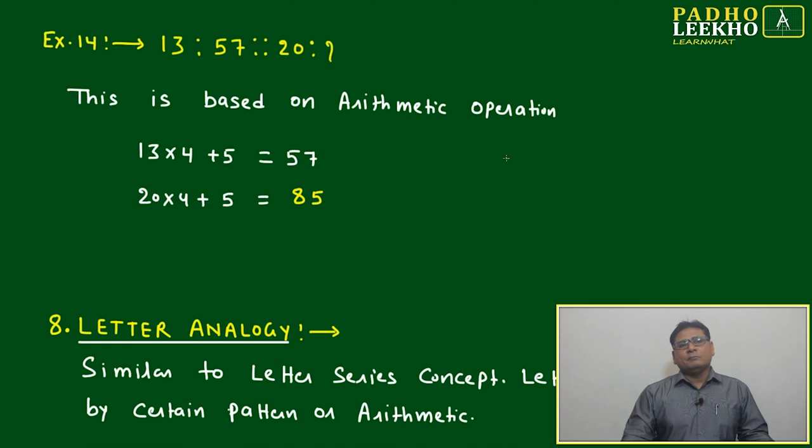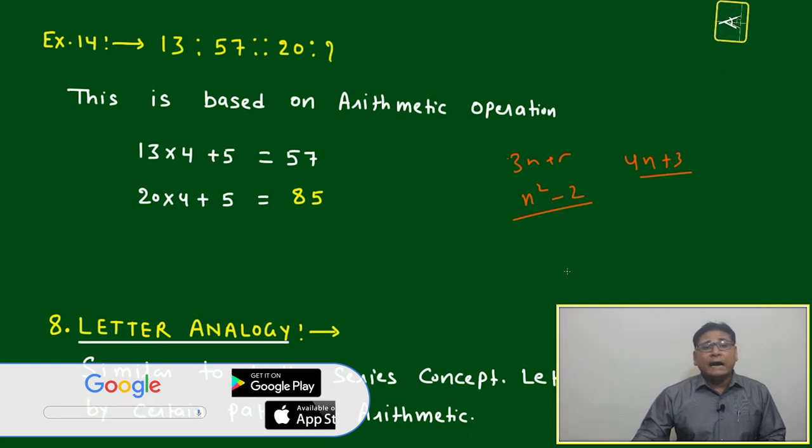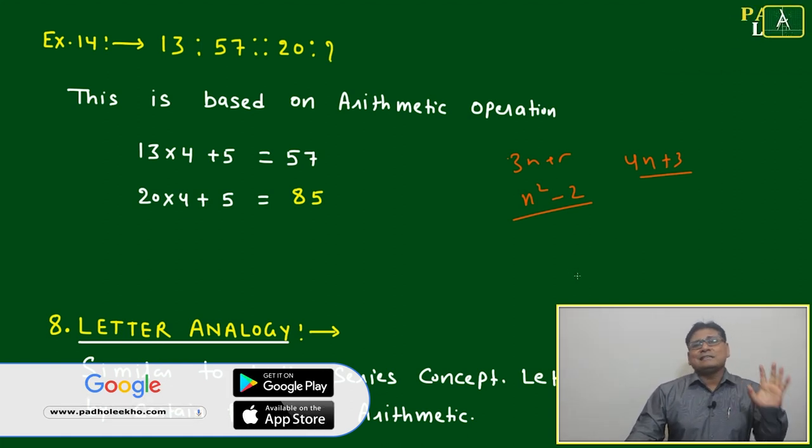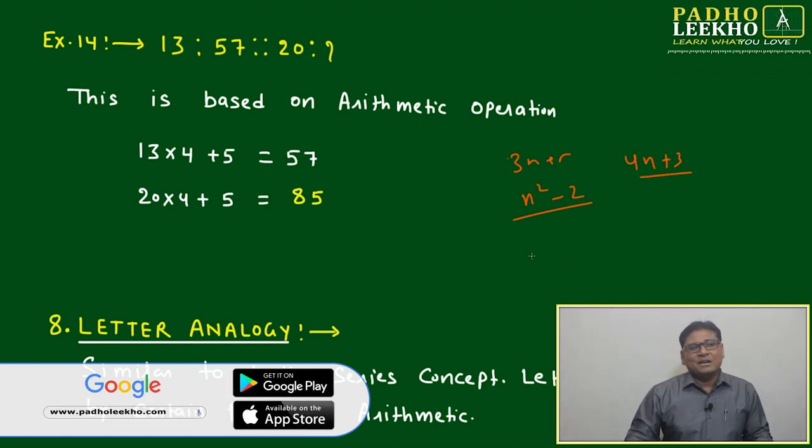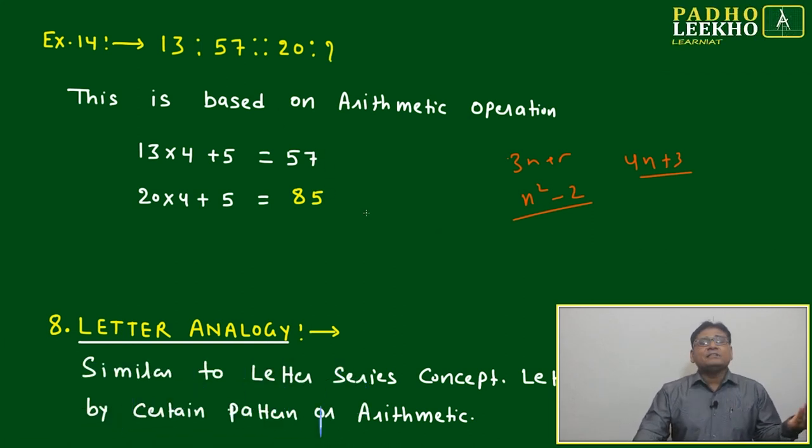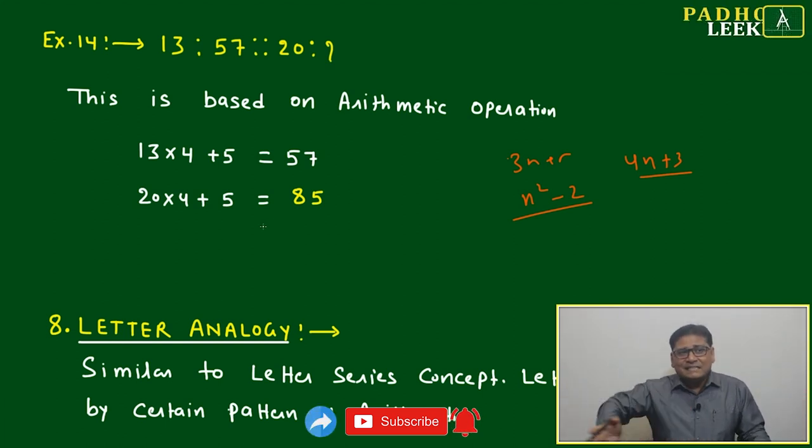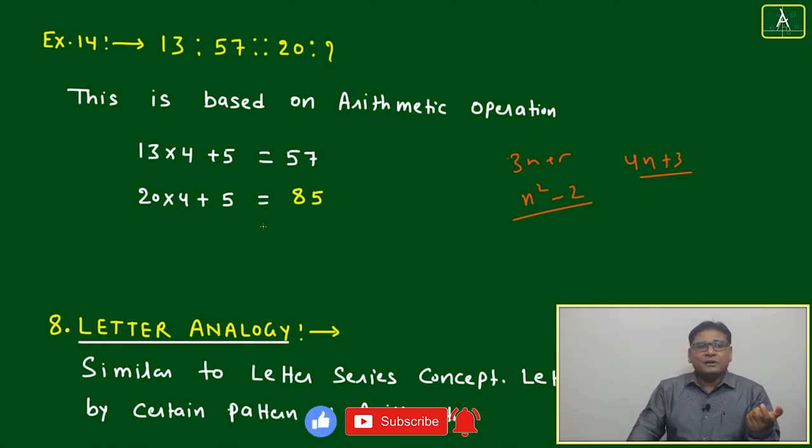Making the relation is very simple: 3n plus 5, we can confirm n square minus 2, or we can write 4n plus 3. But identifying this particular relation is difficult. Like 13 and 57 can be interrelated with multiple types of arithmetic relations. And this is not a series, this is only two numbers.